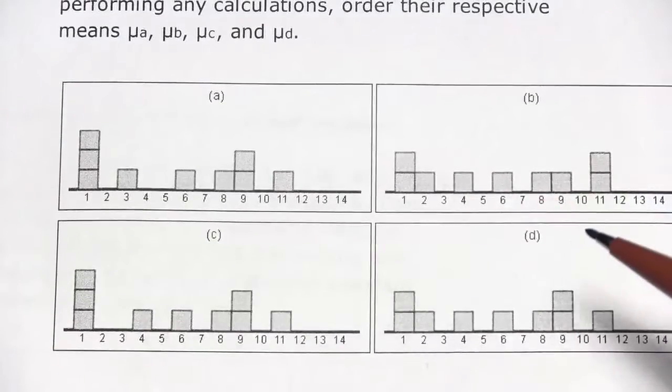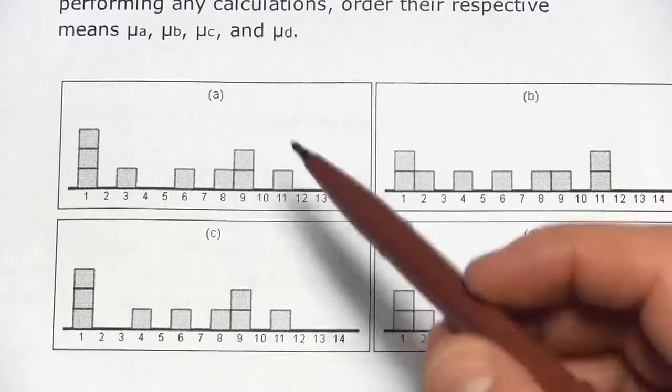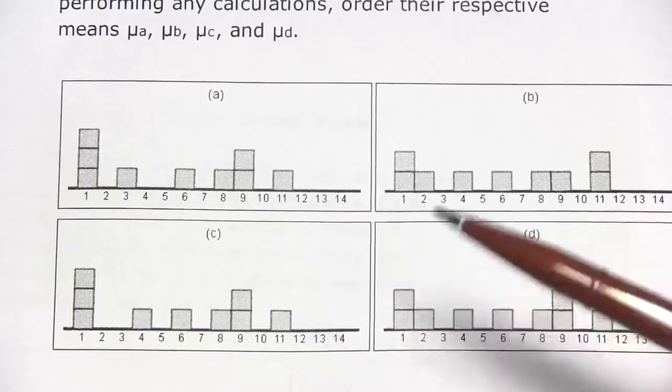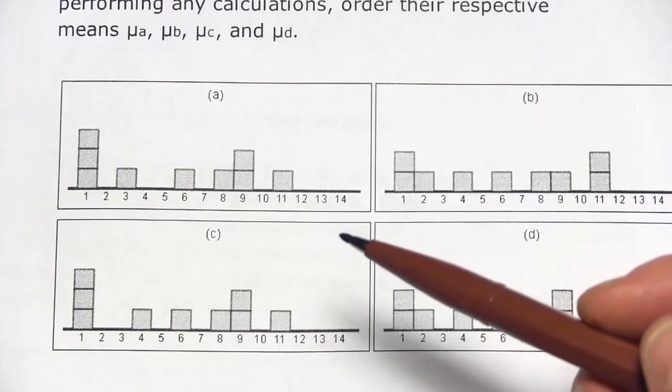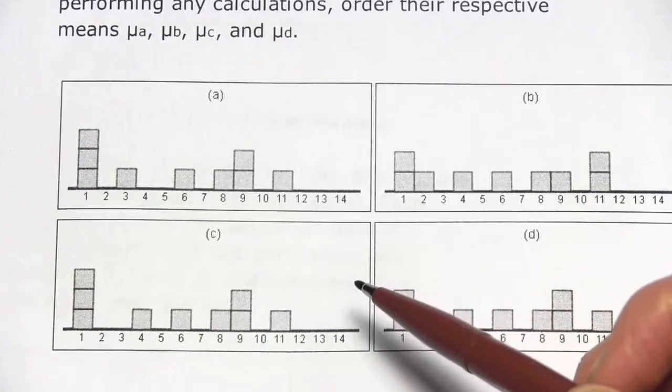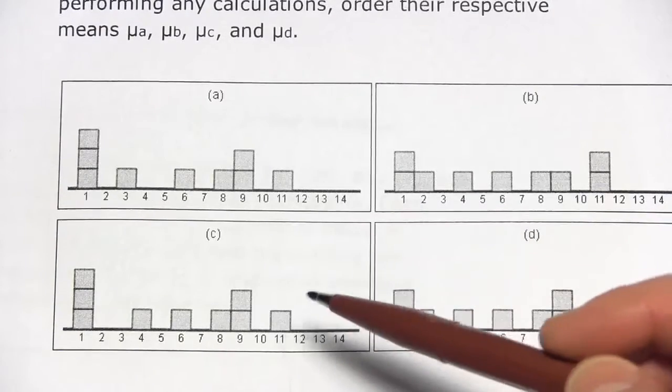You can see how that works and we have these four distributions. If two distributions are the same, their means will be the same. If everything is the same except for one little thing, we can focus on that one little thing and then make a decision about what that means for the mean.